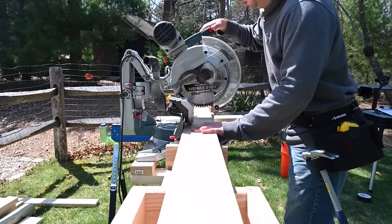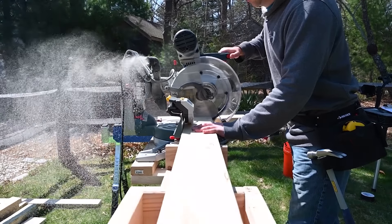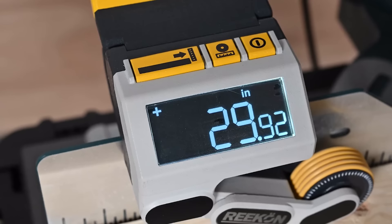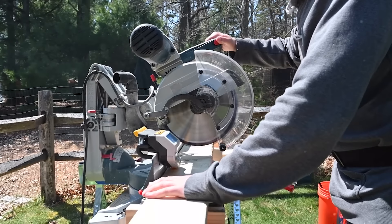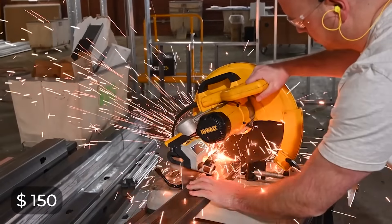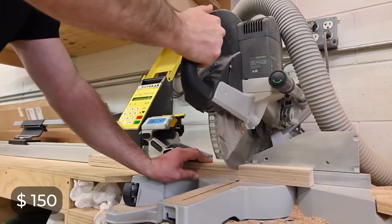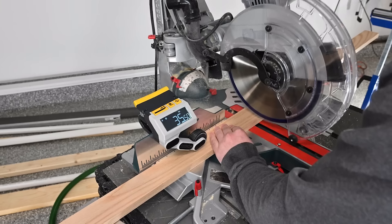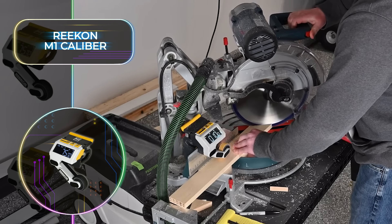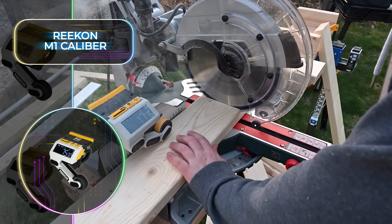Whether you're making straight cuts or beveled edges, you have full control over your project's dimensions. The Recon M1 Caliber can switch between different units and is powered by two double-A batteries, lasting up to 15 hours straight. With prices starting at just $150, it offers affordability without compromising on quality, ensuring you never have to struggle with pencil measurements again.